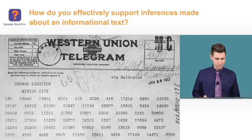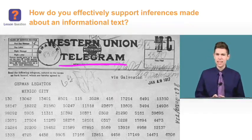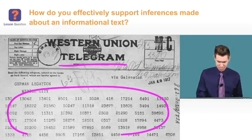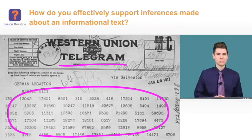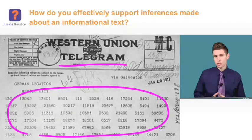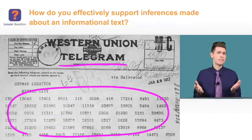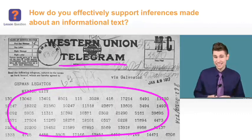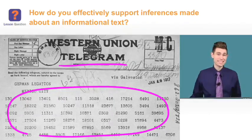On the screen you see an image of a telegram, and most of the message in this telegram is written in numbers. This telegram is from World War I, which began in Europe. But how did the United States get involved in that war? Well, it actually has to do with the message that's encoded in this telegram. So you'll learn more about this telegram in this lesson.